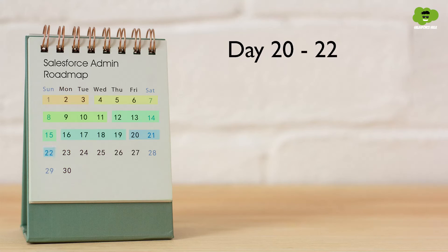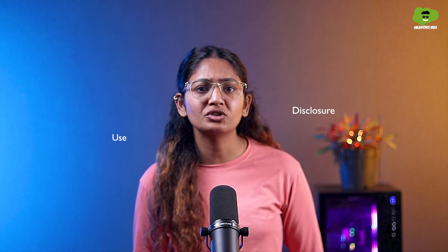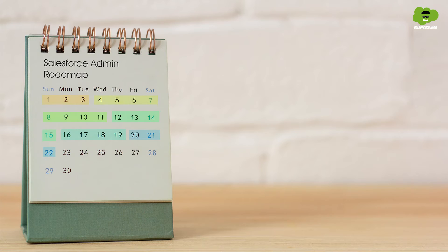From day 20 to 22, learn about how to keep your data safe. Data security is all about protecting your data from unauthorized access, use, disclosure, disruption, modification, or destruction. Understand who gets to see what and how to control access. Get into object-level security using profiles and permission sets.